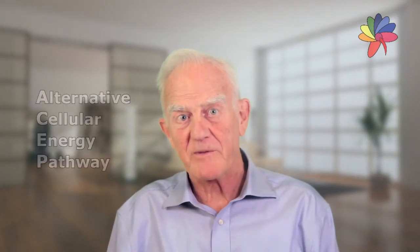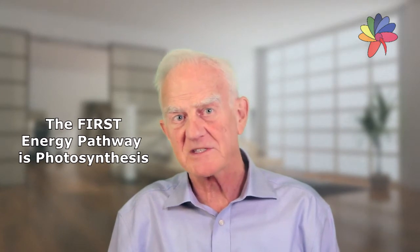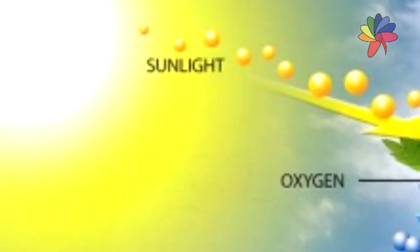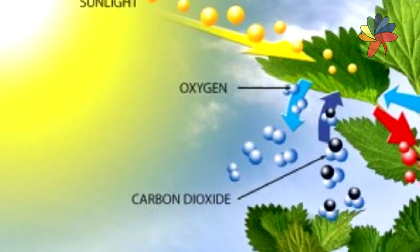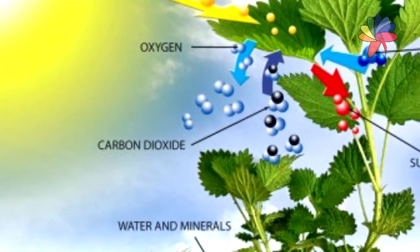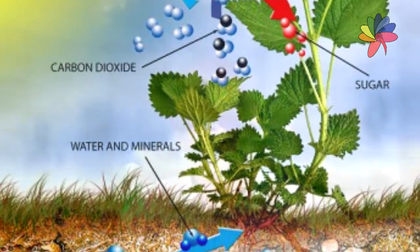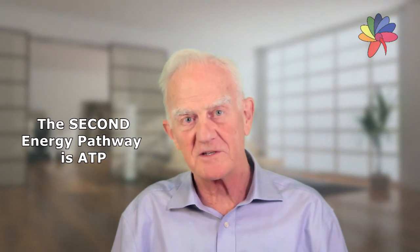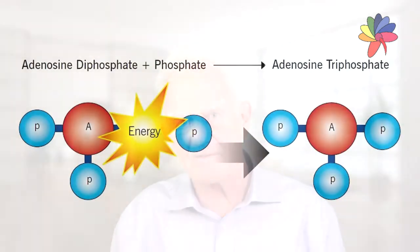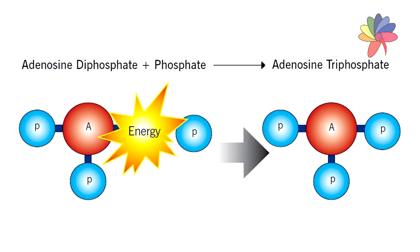The first energy pathway of nature is photosynthesis. Sunlight-derived energy in conjunction with chlorophyll combines carbon dioxide and water to make sugar molecules. In the second energy pathway, food is metabolized along with oxygen to add phosphate to adenosine diphosphate to create a high energy molecule, adenosine triphosphate — ATP. ATP is widely used as a source of chemical energy for the cell's activities.